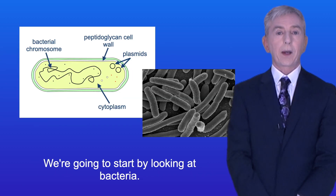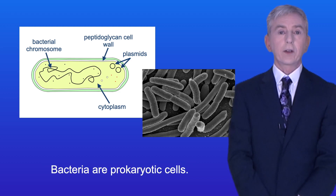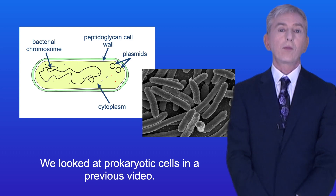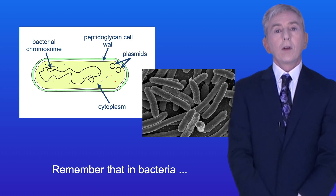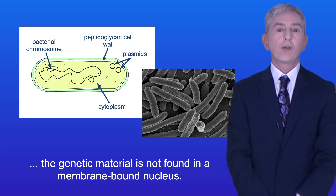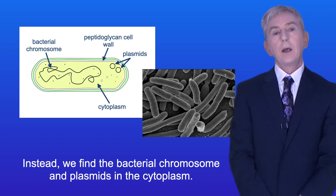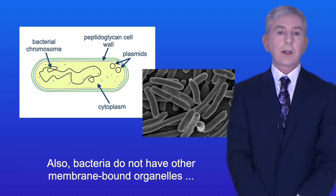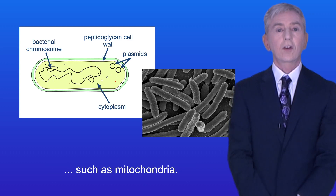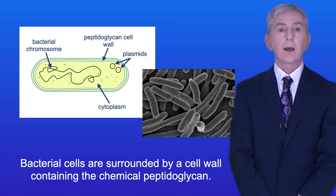We're going to start by looking at bacteria. Bacteria are prokaryotic cells. Remember that in bacteria the genetic material is not found in a membrane-bound nucleus. Instead, we find the bacterial chromosome and plasmids in the cytoplasm. Also, bacteria do not have other membrane-bound organelles such as mitochondria. Bacterial cells are surrounded by a cell wall containing the chemical peptidoglycan.